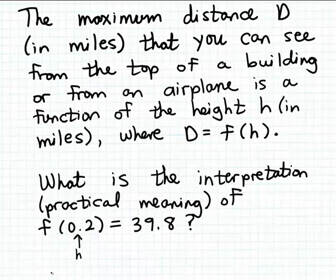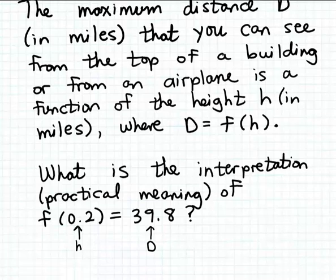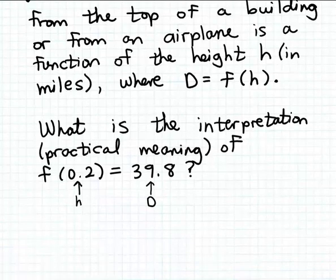And then this value 39.8, that's the output that matches the input 0.2 according to the function f, and that then is going to be a distance value. So this corresponds to the variable D. This gives us a good clue now as to how we can interpret the meaning of this equation.